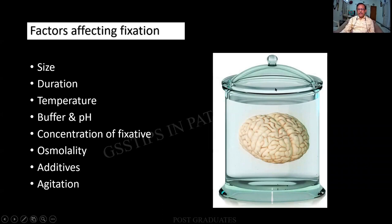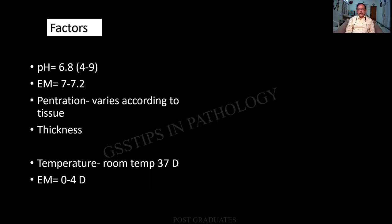A superb diagram — this is called the brain jar, a suspended one. Please appreciate that all surfaces are exposed to the fixative. Sometimes large specimens are allowed to rest at the bottom, as a result of which the bottom will not be fixed — we find it has a different staining pattern, which we call a fixation artifact. pH can be somewhere between 4 to 9; 6.8 is adequate for routine use. For electron microscopy it is 7 to 7.2. Penetration varies according to tissue: fat has minimal permeability whereas lung has maximum permeability.